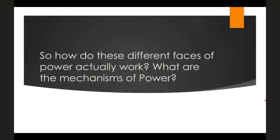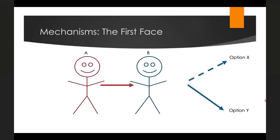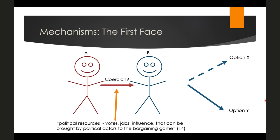Now, how do these different faces of power actually work — what are the mechanisms? For the first face of power, the obvious way A can influence B's actions is through coercion or the threat of coercion. If I want you to do something you wouldn't otherwise do, I can threaten violence, threaten to harm you in some way, threaten to take resources from you, or threaten your life or well-being. Coercion — whether by a government or a private individual — is obviously one form of this power.